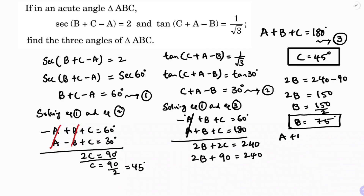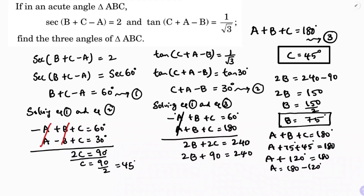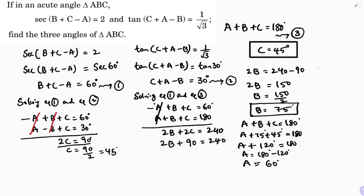Now A plus B plus C equals 180. B is 75 and C is 45, so A plus 75 plus 45 equals 180, meaning A plus 120 equals 180. Therefore A equals 180 minus 120, so angle A is 60 degrees. So the three angles are: A is 60 degrees, B is 75 degrees, and C is 45 degrees.